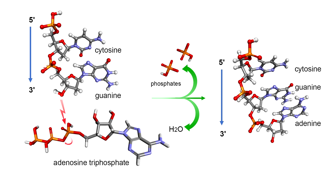The phosphate group attached to the 5-prime carbon of the sugar on one nucleotide forms a phosphodiester bond with a free hydroxyl on the 3-prime carbon of the next nucleotide. The chemical reaction to form the phosphodiester bond is a condensation reaction, which means it releases a water molecule.